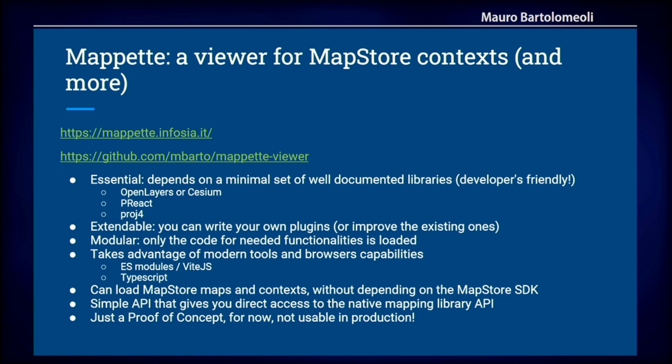Mappette is something that Italians can probably understand, but not Italian-speaking people. It has some interesting features. First of all, it's very essential — it depends on a very limited amount of external dependencies. This has been achieved mainly by leveraging modern browser capabilities that are very different from what we had some years ago. Another feature is that it's compatible at the API level with MapStore, but without reusing the same code. As I said, it's just a proof of concept and not a project ready for production, but it demonstrates the possibility of having a different tool for a specific use case that existing complex solutions are probably not able to address.